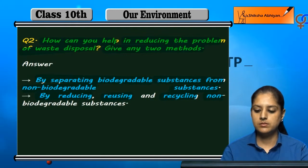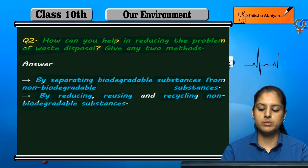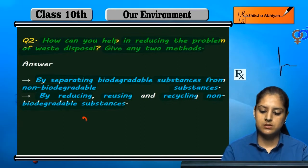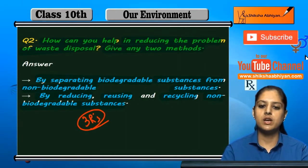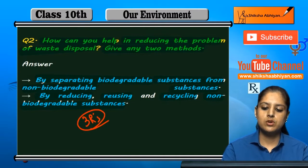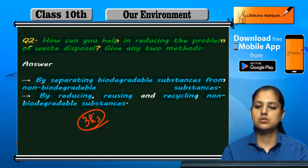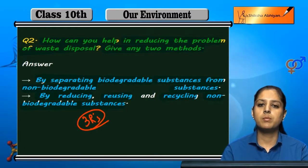By reducing, reusing, and recycling non-biodegradable substances. Agar hum three R's — reduce, reuse, recycle — ko follow karein, to hum is problem ko prevent kar sakti hain, isko reduce kar sakti hain. Agar hum apna use of resources reduce karein...